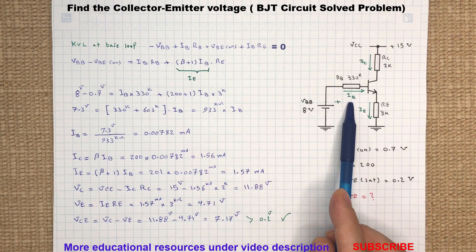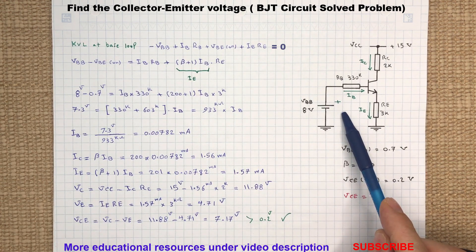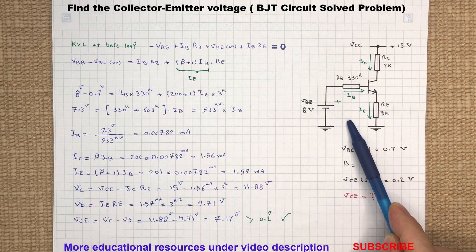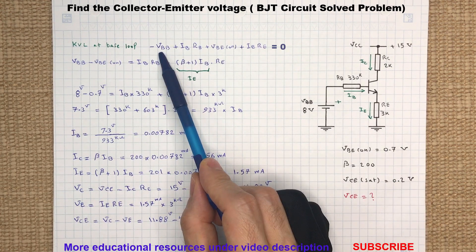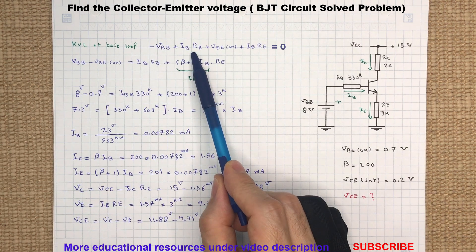With a simple KVL in the base-emitter loop, we will be able to determine the base current IB. We start writing the KVL by the 8 volt source and then the voltage drop across resistor RB, base-emitter junction, and the resistor RE.